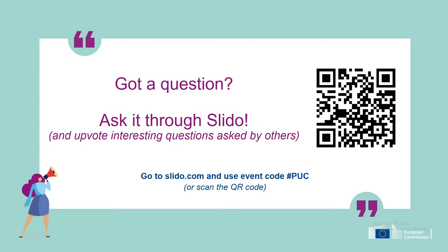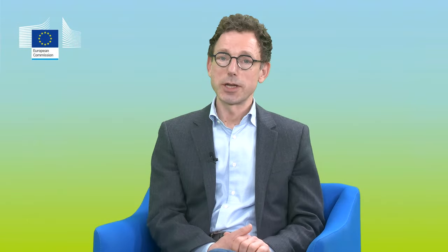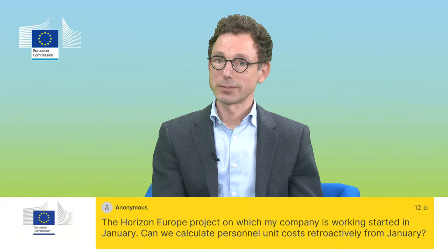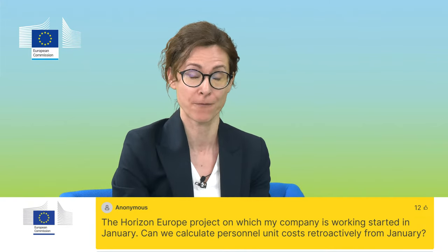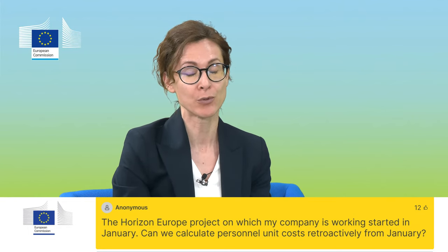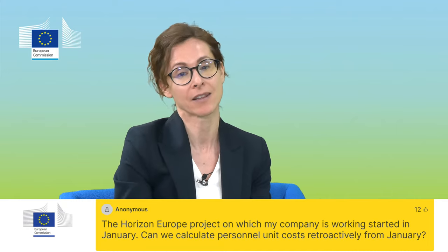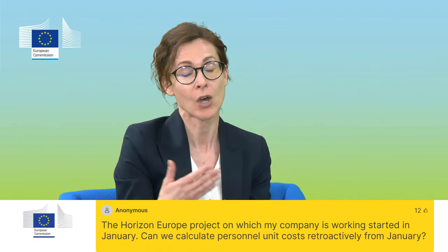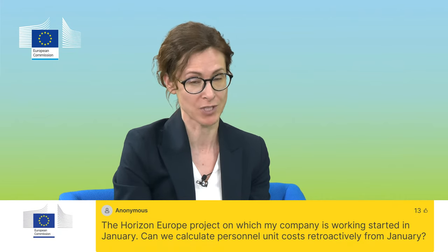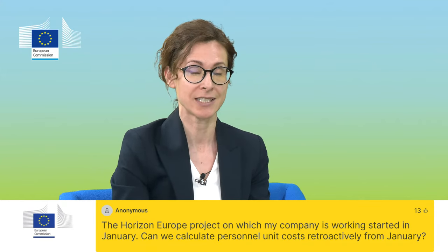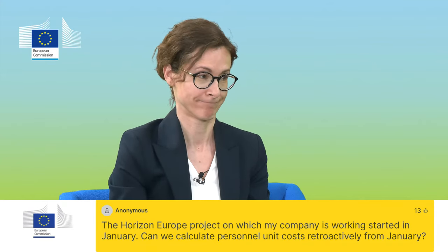Next question: Our Horizon Europe project started in January — can we calculate personal unit costs retroactively from January? The request for personal costs can only be made from the 1st of May 2024. When you get the approval of your unit costs, it will apply only to grants which are in grant preparation at that stage — future grants. Unfortunately, in the case of a grant that has already started in January, it will not be possible to use it. However, if you have another grant coming up, you could have it apply in a future grant.